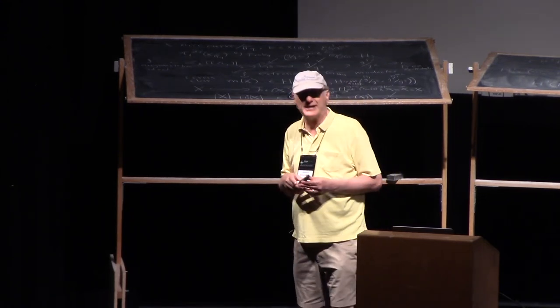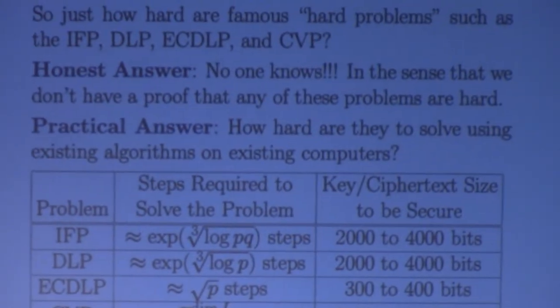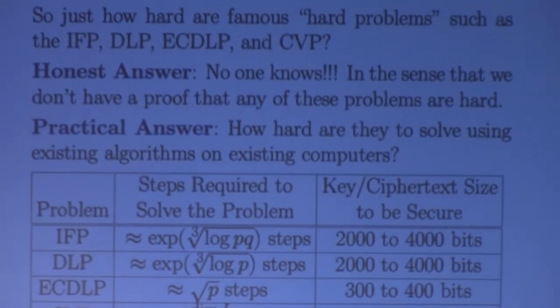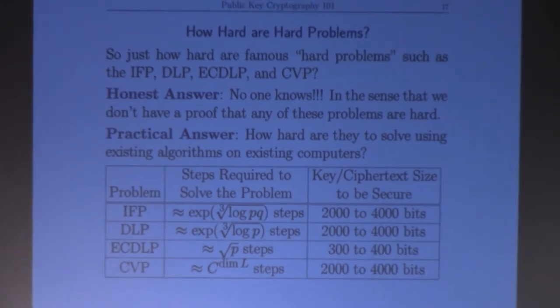Here's the practical answer: how hard are these problems using the algorithms we know? This is time dependent. Thirty-some-odd years ago, before the number field sieve was created, the top two lines were different. Integer factorization and the discrete log problem on the multiplicative group—this is about how many steps it takes to solve them: e raised to the cube root of the log of the main parameter, the modulus. Using those, secure crypto systems require two to four thousand bits.